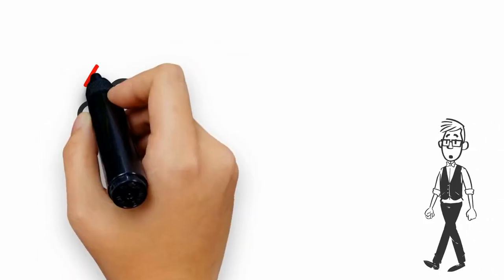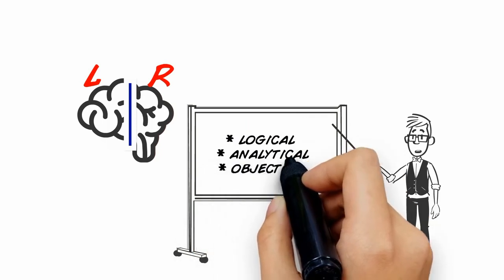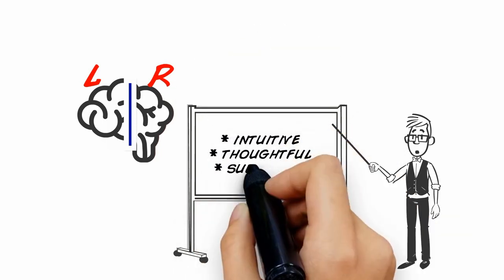Are you right-brained or are you left-brained? A left-brained person is said to be more logical, analytical, and objective, while a right-brained person is said to be more intuitive, thoughtful, and subjective.